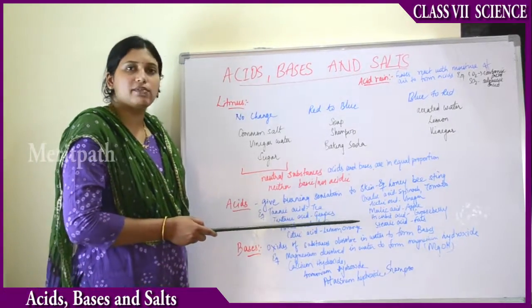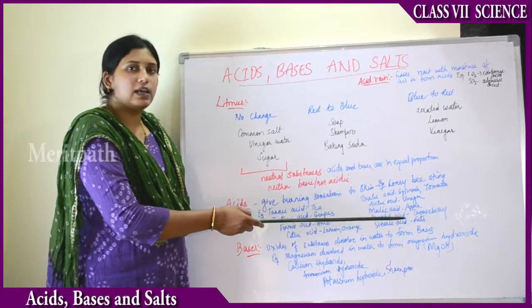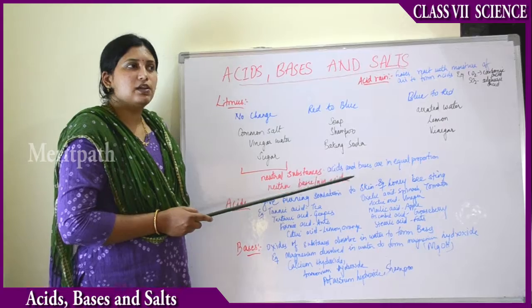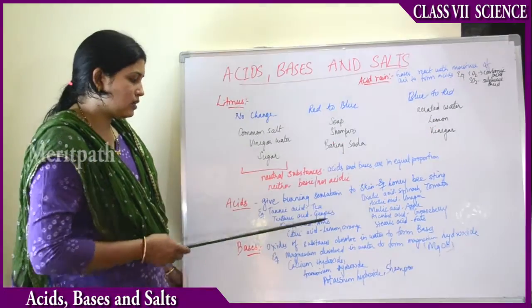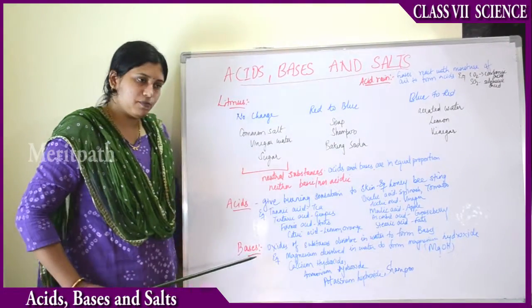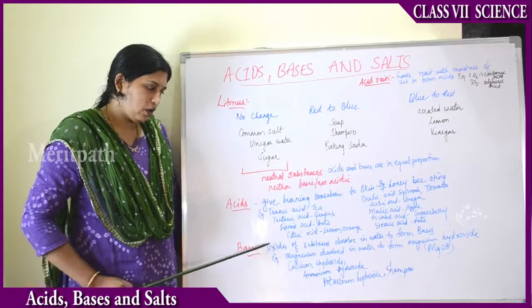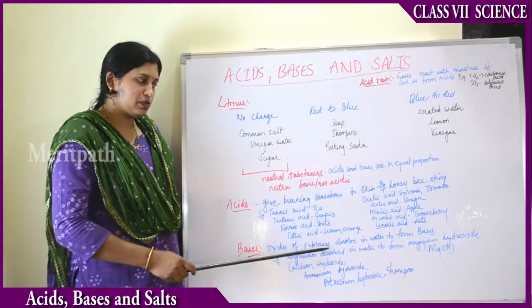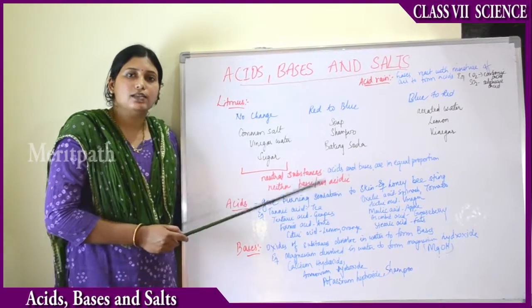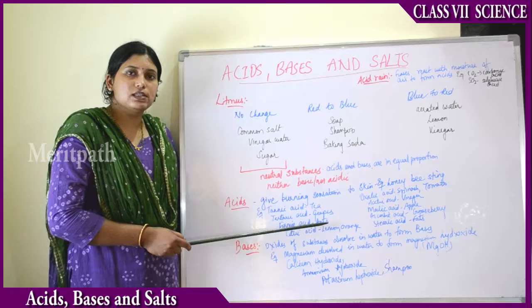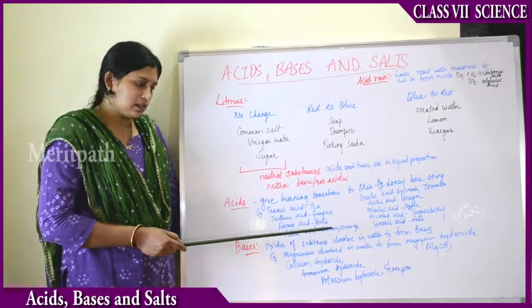Ascorbic acid is also known as vitamin C. Stearic acid is present in fats. Bases are nothing but oxides of substances dissolved in water to form bases — always indicated by OH in their chemical formula.